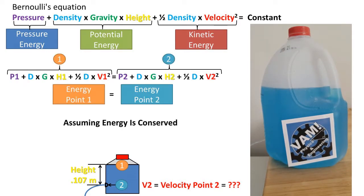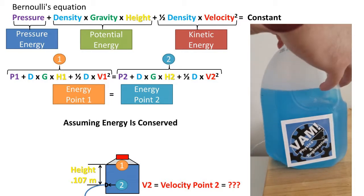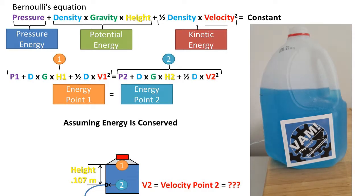We will assume the energy is conserved. This means that the energy at point 1 equals the energy at point 2. So we can set the Bernoulli equation at point 1 equal to the Bernoulli equation at point 2.